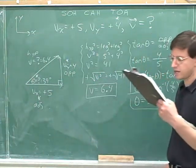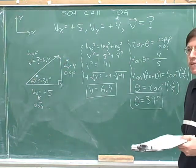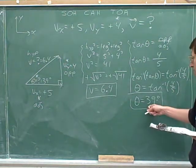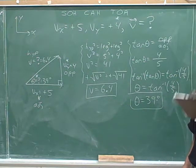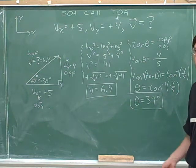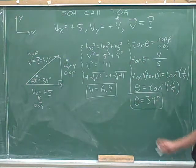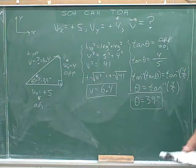If you got that theta was 0.67, you must be in radians mode, not degrees mode. Your calculator should have told you that theta is 39. If your calculator told you that theta is 0.67, you need to change your mode out of radians and into degrees. But if your calculator said that theta is 39, then you're in good shape.